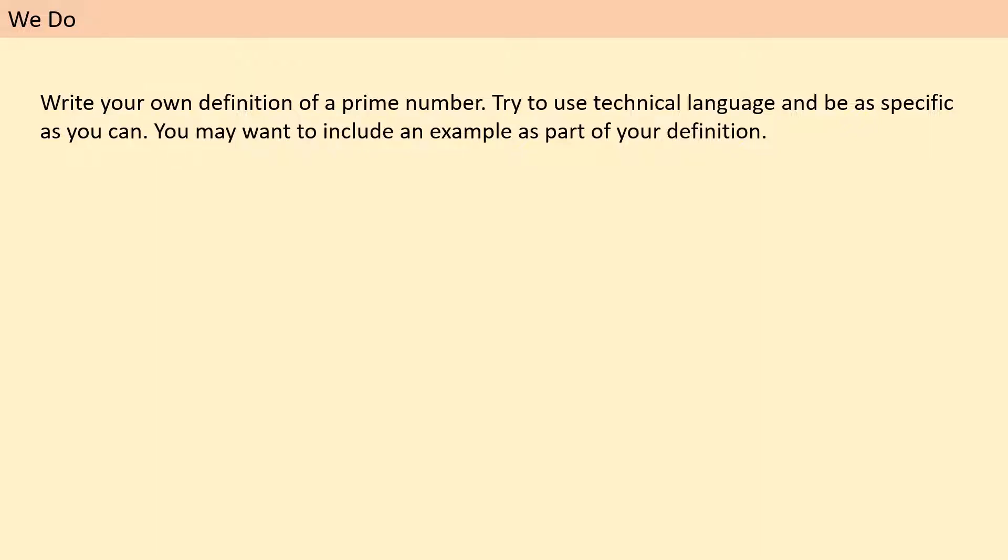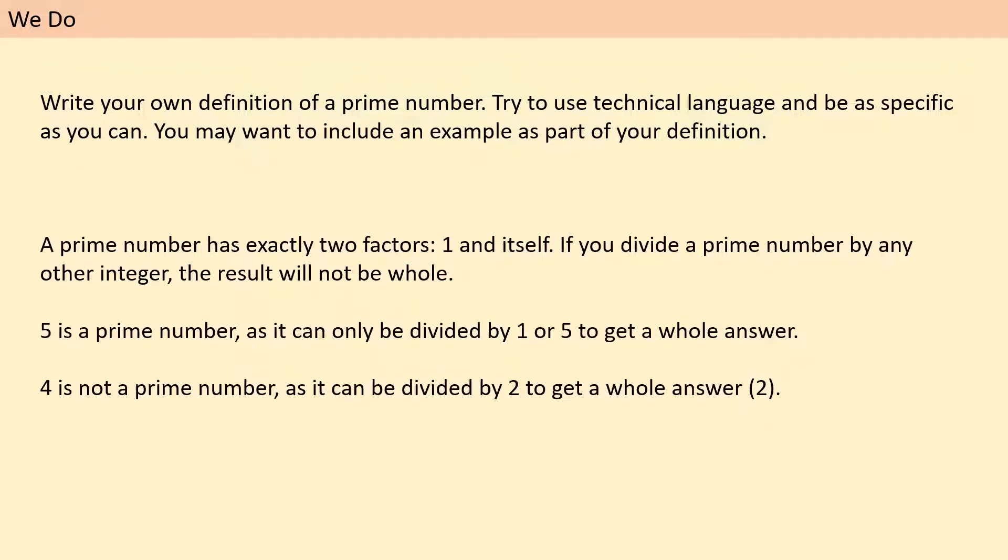Okay, so what I'm going to do now is to show you my example definition of a prime number, and you can see how yours matches up. You might want to tick and fix, add in any bits that you've missed. So a prime number has exactly two factors, one and itself. If you divide a prime number by any other integer, the result will not be whole. So remember that's our definition of a factor is if it can be divided by one integer to get an answer of another integer. I've given some examples here. Five is a prime number as it can only be divided by one or five to get a whole answer. Anything else comes out as a decimal. I've also given what we call a non-example. Four is not a prime number as it can also be divided by two to get a whole answer. So again, if you want to pause the video and edit your definition to include anything I've brought up, then you may. Equally, if you've got something and you think I've missed out on it, I would really like you to put the comments into the group chat on this particular lesson so that everyone else can see and we can contribute together to come up with an even better definition. You might have thought of something that I've not.